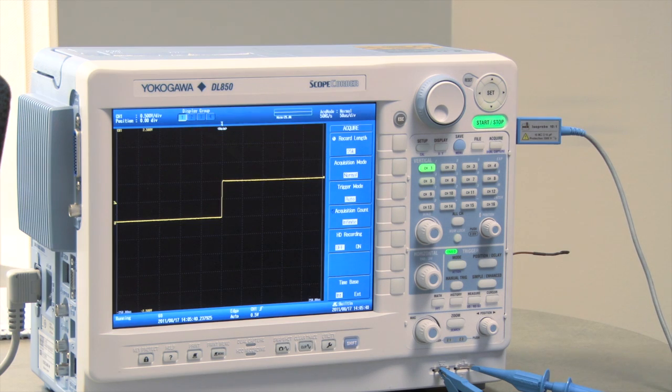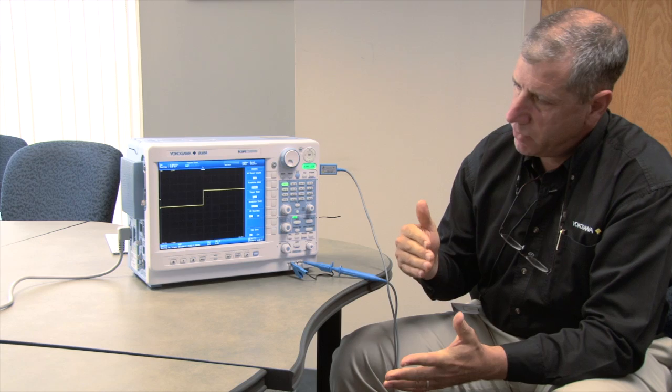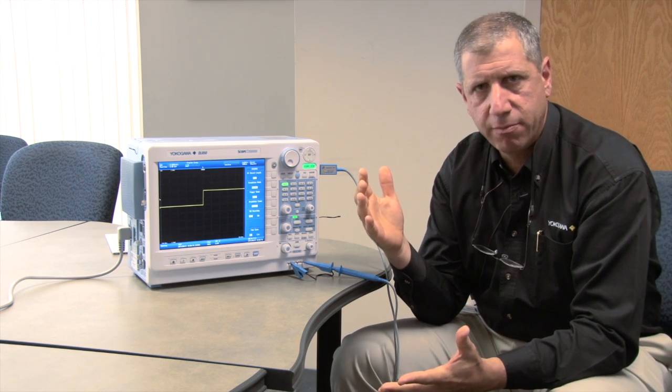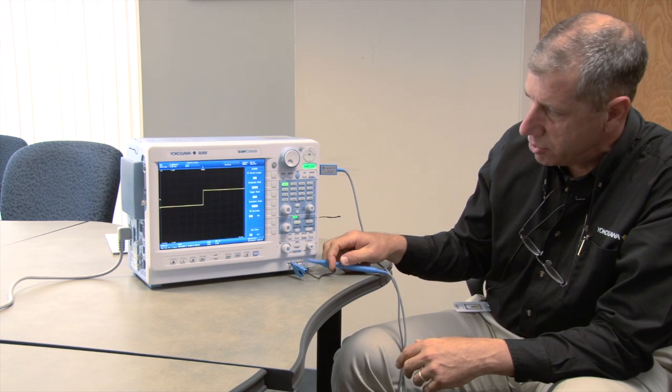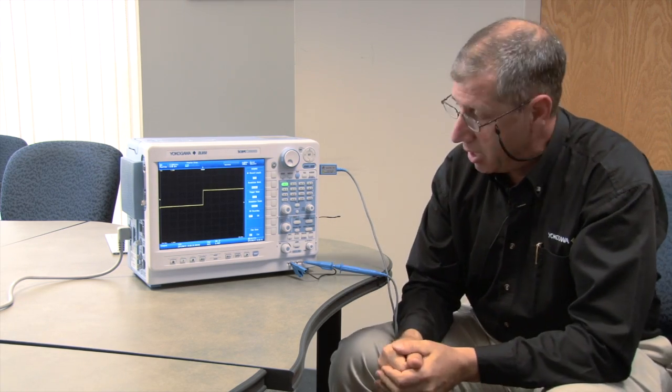Another nice feature about Yokogawa's oscilloscopes is we provide a history memory. We're going to save each screen acquisition, kind of like a Rolodex. Let's say you have an intermittent failure. As that failure occurs, you can go back and look at probably what caused that anomaly.